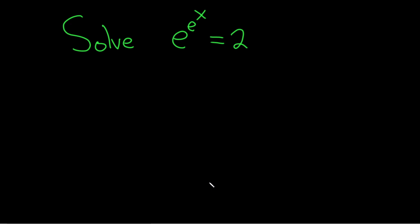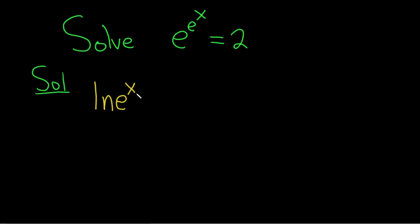Solve e to the e to the x equals 2. This is a scary looking problem, but it shouldn't be too difficult. We're going to use this super powerful formula, which says the natural log of e to the x is equal to x. This is super useful to know.